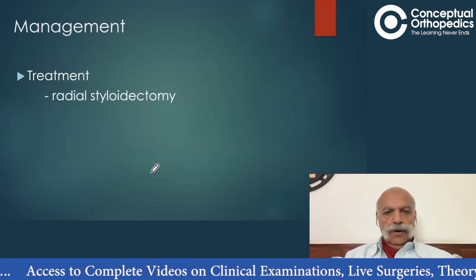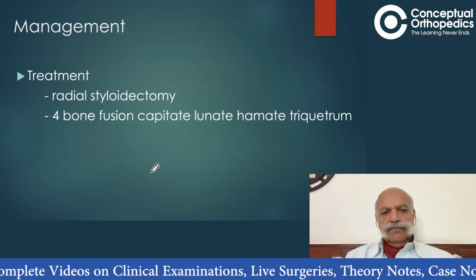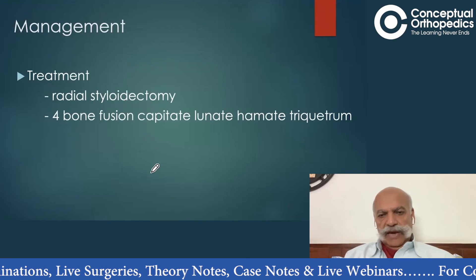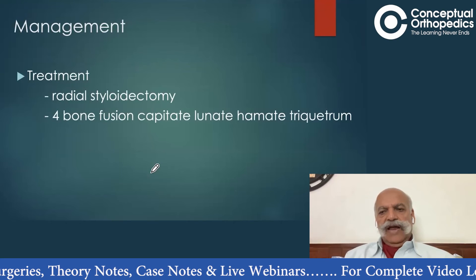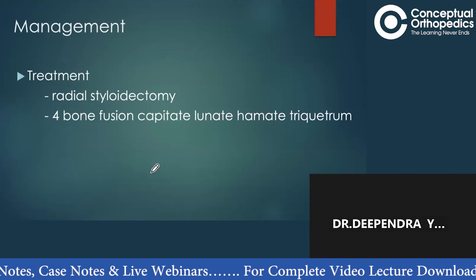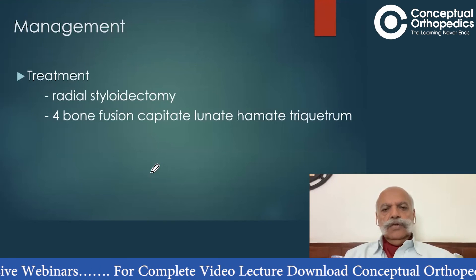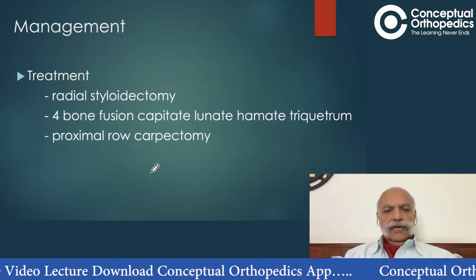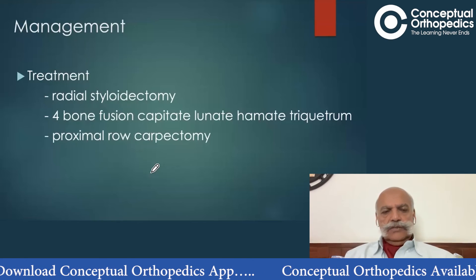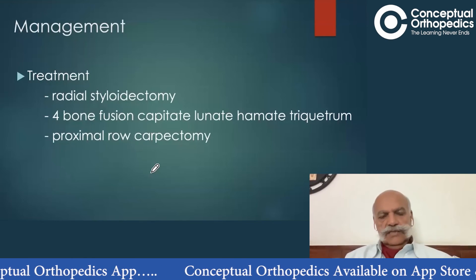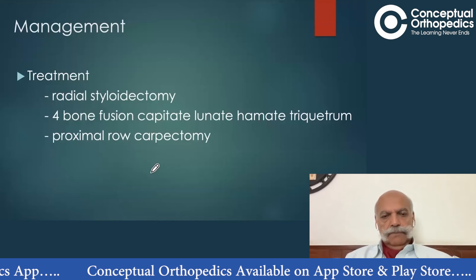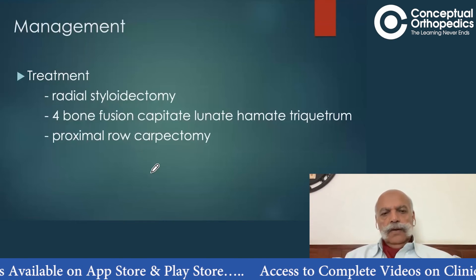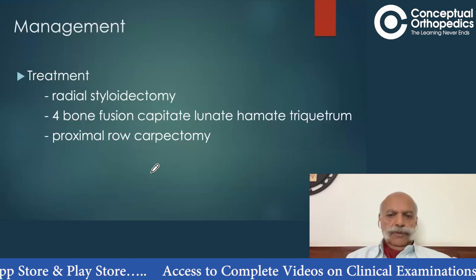We considered the treatment options in such cases to be a radial styloidectomy, or if the arthritis is more extensive, one can perform a four-bone fusion between the capitate, lunate, hamate, and triquetrum — and sometimes the scaphoid can be excised during a four-bone fusion. The last option available is a proximal row carpectomy, for patients for whom wrist movement is more important.